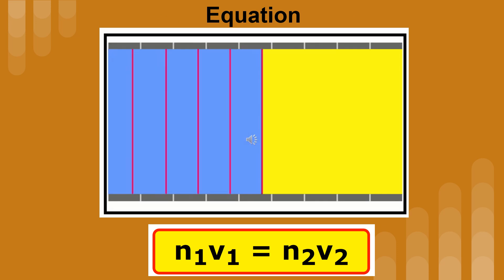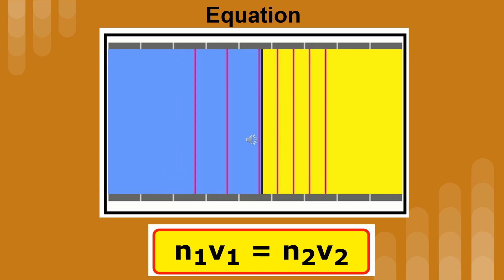Here is the equation that relates the index of refraction, N, of the medium with speed, V. 1 is the first medium or the starting medium, and 2 is the second medium.